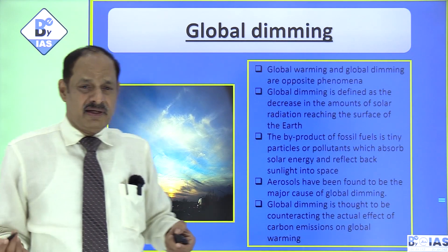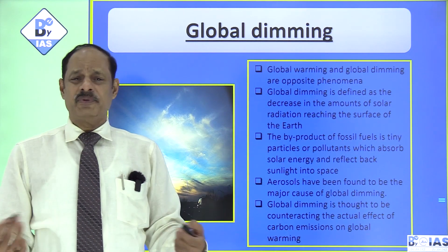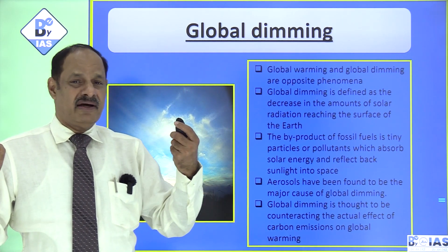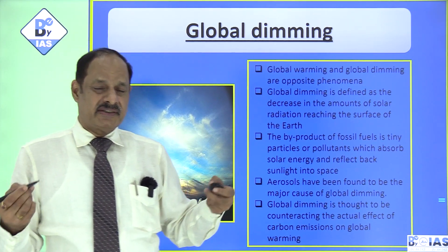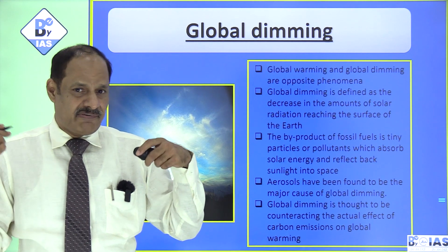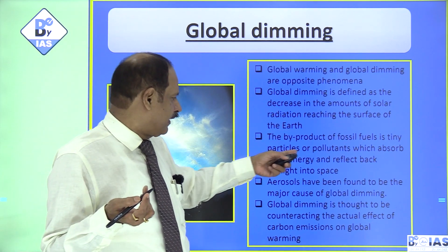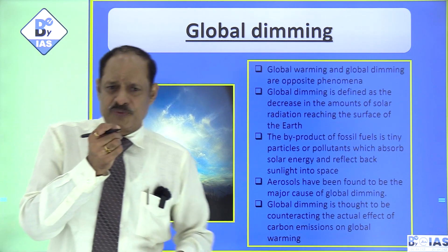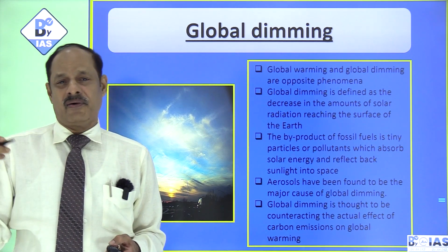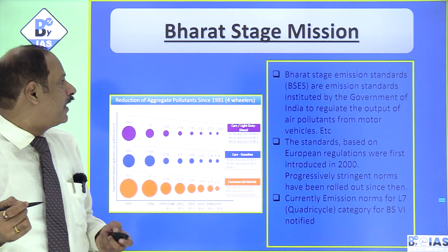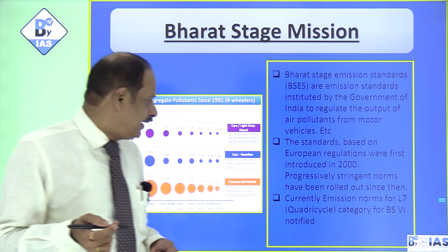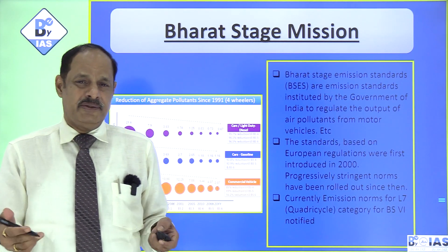Global dimming is the opposite of global warming — instead of carbon increasing temperatures, certain tiny microscopic particles (byproducts of fossil fuels) reflect sunlight back instead of letting it pass through, causing what is called global dimming. The Bharat Stage emission standards are the Indian version of emission standards, based on the framework released by European regulations.